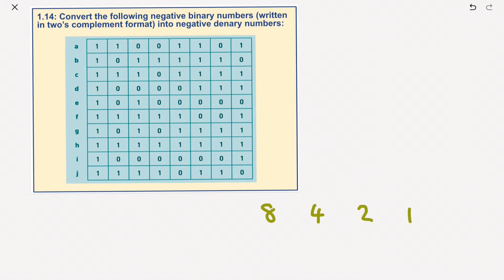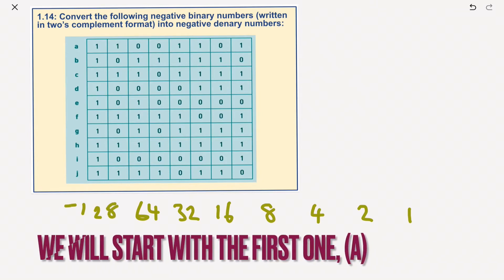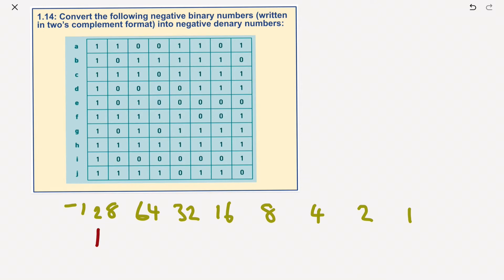As you will remember, we go 1, 2, 4, 8, 16, 32, 64, 128, but this is a minus. Now, what it's saying is we've got 1, 1, 0, 0, 1, 1, 0, 1 in there. We'll ignore the 128 for the moment, but we'll put down 64 plus 8 plus 4 plus 1 equals 77.